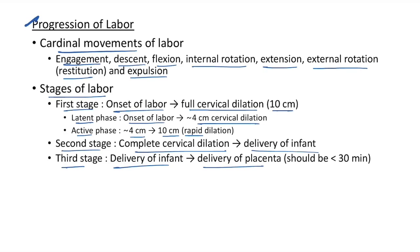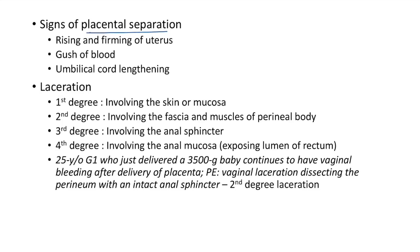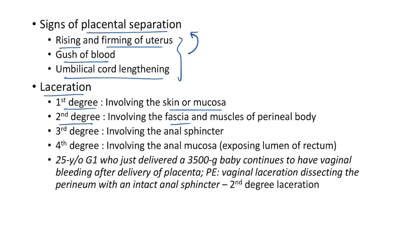Signs of placental separation: rising and firming of uterus, gush of blood, and umbilical cord lengthening. Vaginal lacerations: first degree — skin or mucosa; second degree — fascia and muscles of perineal body; third degree — anal sphincter; fourth degree — anal mucosa exposing lumen of rectum.